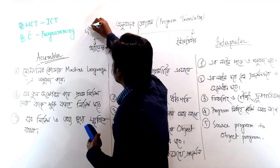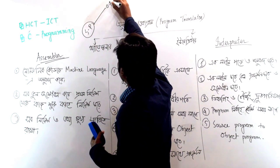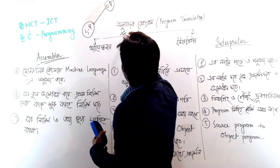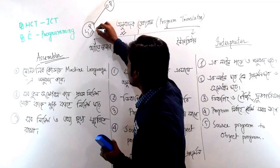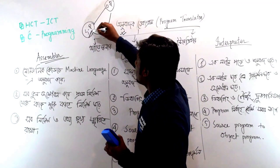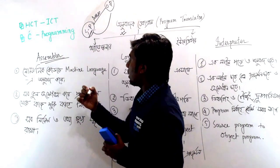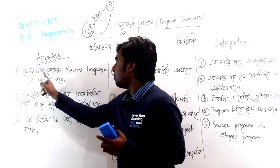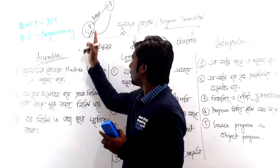The source program is given as input, and the object program is produced as output. This is called a program translator. The program translator takes the source program — which may be in assembly language — and converts it to machine language as the object program.